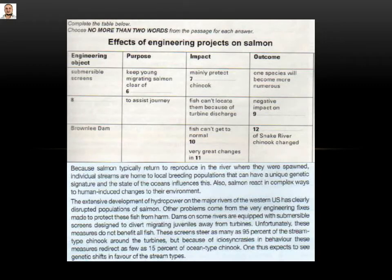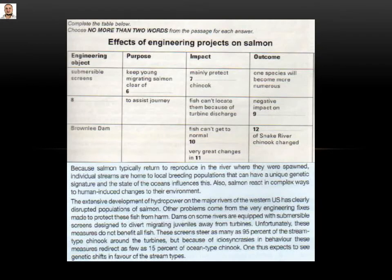The purpose is: 'keep young migrating salmon clear of...' Looking for this answer: 'to divert migrating juveniles away from turbines.' Juveniles means young. Away from turbines. So number six here will be 'turbines.'